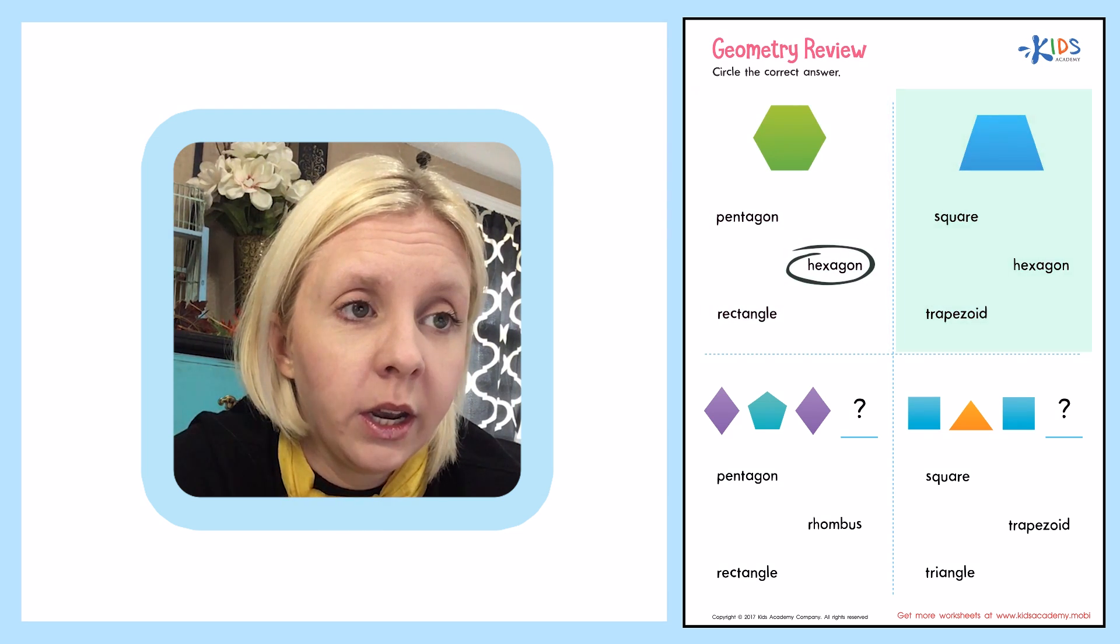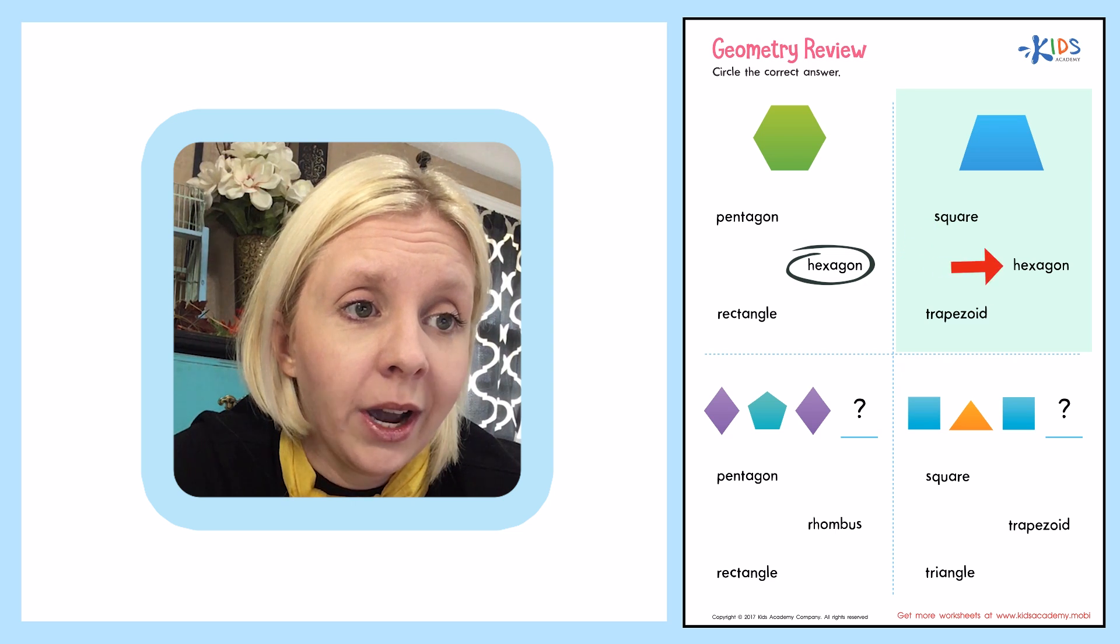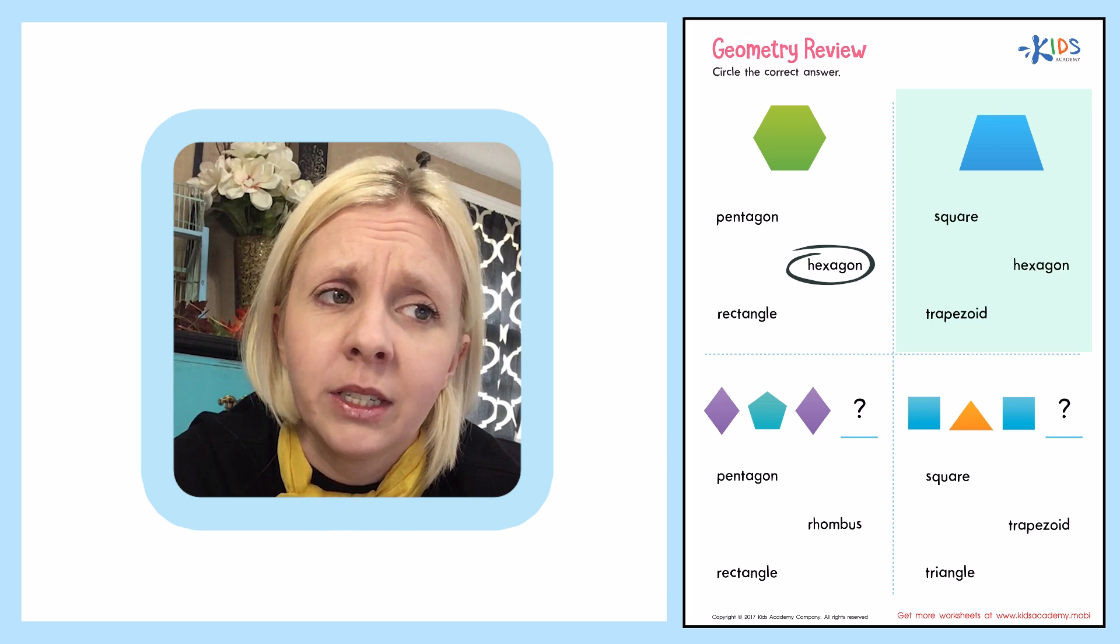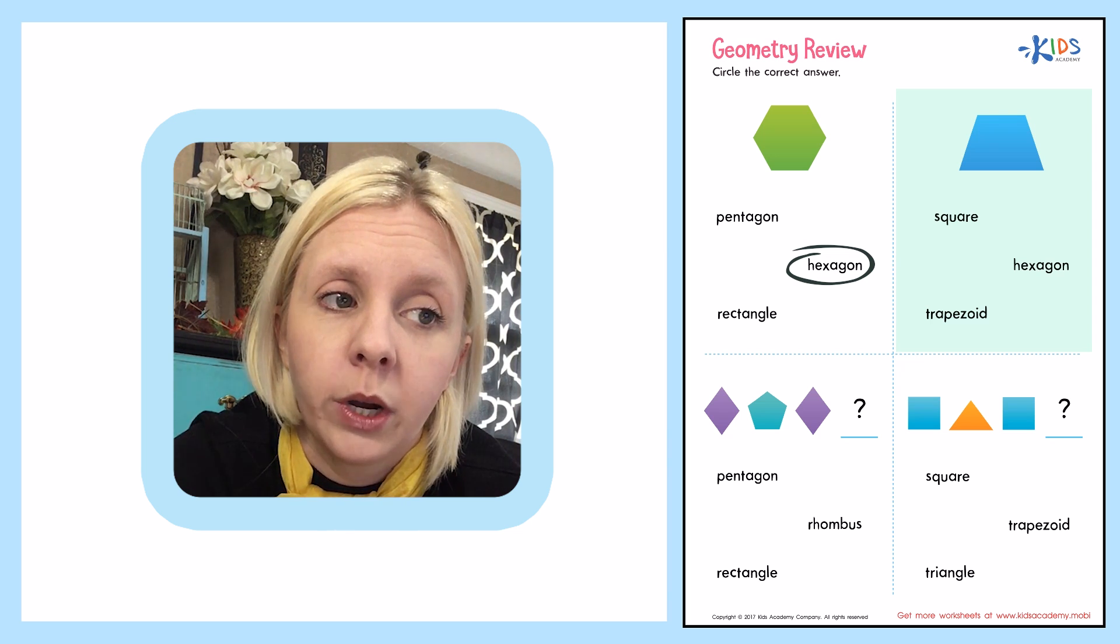The next one says, is it a square, a hexagon, or a trapezoid? Well, we know it's not a hexagon because we just saw a hexagon right there and it probably doesn't look like a square. What is a trapezoid?